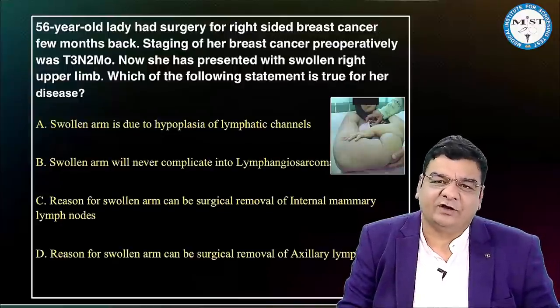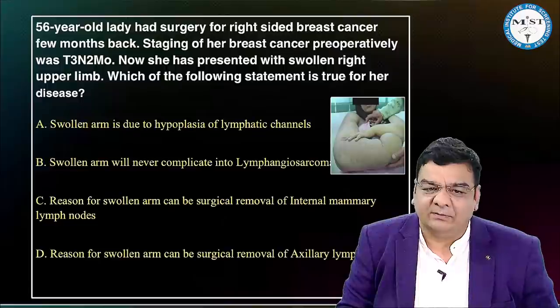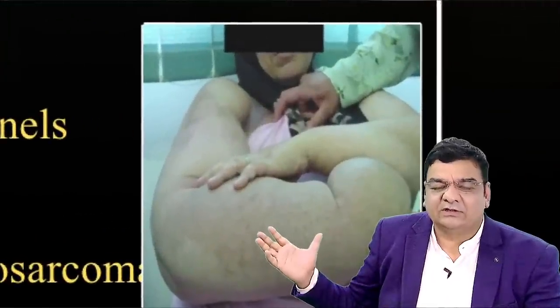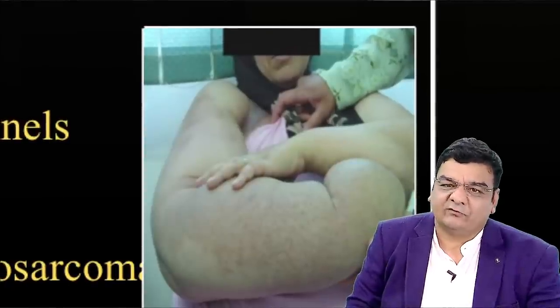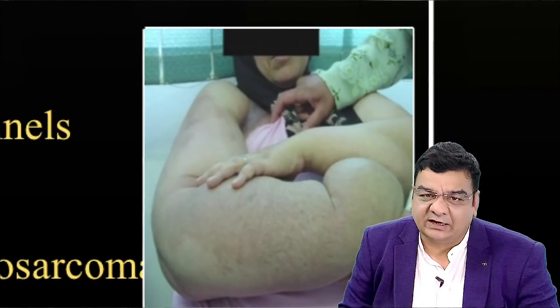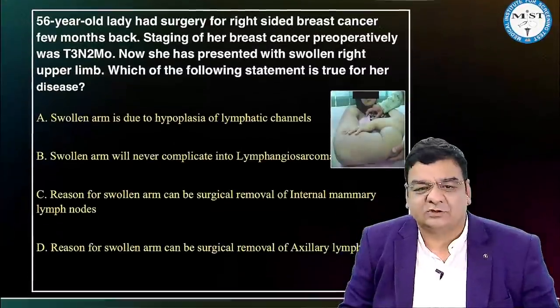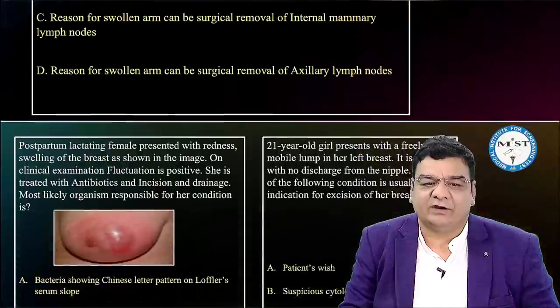You can get image-based questions on lymphedema, which is easily identifiable from images. A common clinical scenario: a lady who has undergone modified radical mastectomy for lymph node-positive breast cancer develops lymphedema — most likely due to removal of axillary lymph nodes during the procedure. This is a crucial area where you need to identify different images.